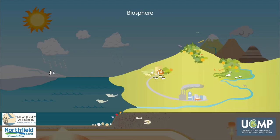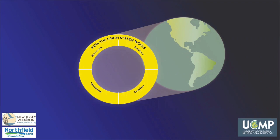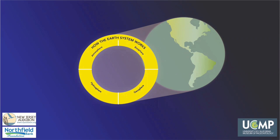The fourth and final part of the Earth is the biosphere, which is all living things, including humans. Living organisms affect and are affected by the atmosphere, hydrosphere, and geosphere. The Earth system consists of connected processes — the atmosphere, hydrosphere, geosphere, and biosphere — that shape our world and how it changes through time.